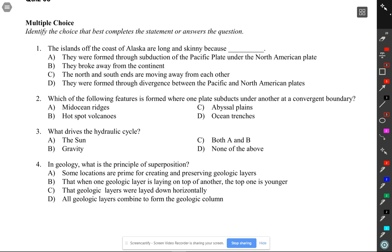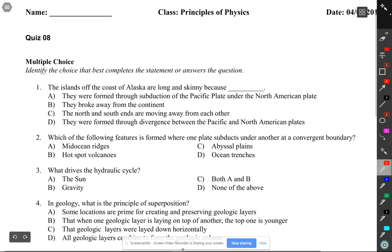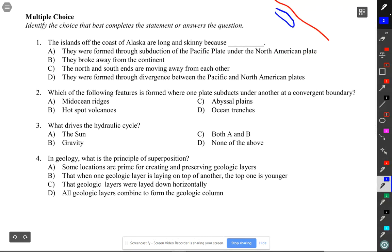The answers from the quiz. Number one, the islands off the coast of Alaska are long and skinny. Remember we looked at the map - we have the coast and we have these islands like this.